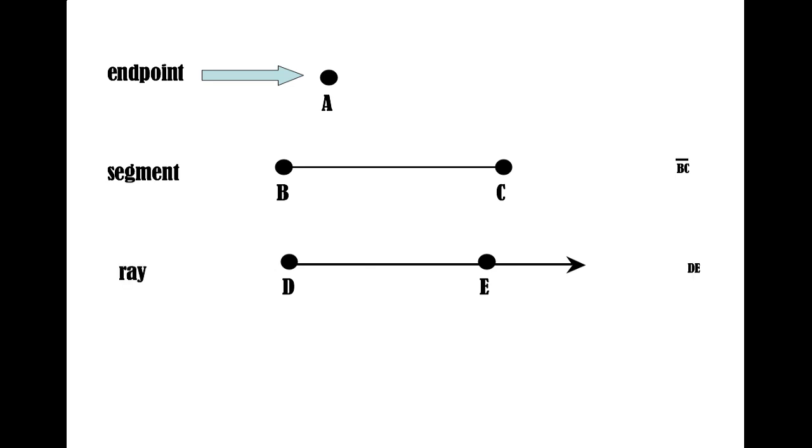To describe a ray, we use the two endpoints and again use a symbol. In this case, the symbol matches the look of the ray: a segment with an arrow on one end.